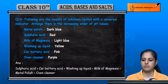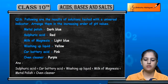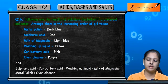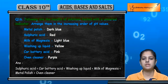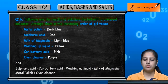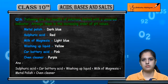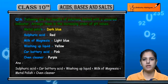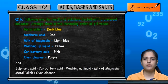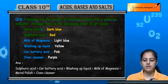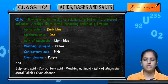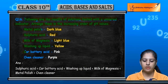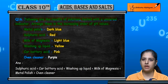Question 16: Following are the results of solutions tested with a universal indicator. We will arrange the pH in increasing order. Metal polish shows dark blue color, sulfuric acid shows red color, milk of magnesia shows light blue color, washing up liquid shows yellow color, and car battery acid shows pink color.